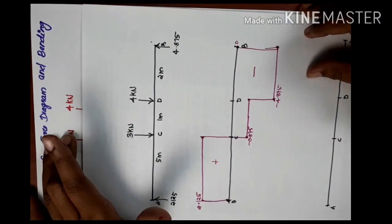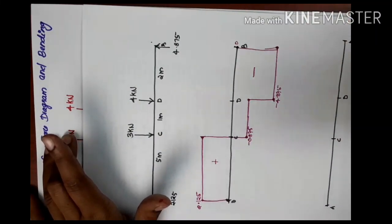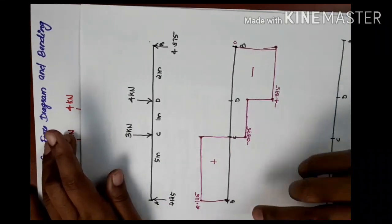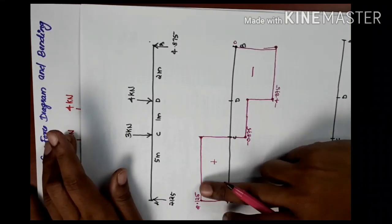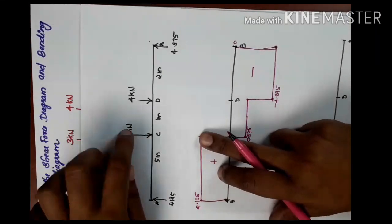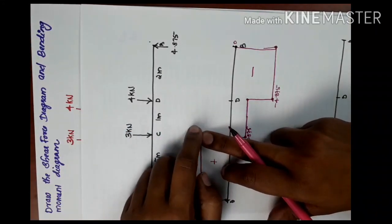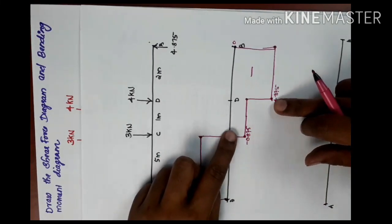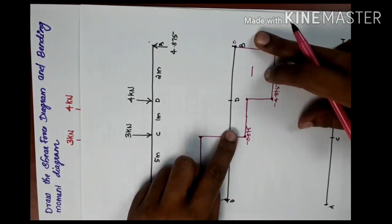Hope you all understand — this is very easy. If we take a positive value on one side, the other side is negative. Positive regions are above the line and negative regions are below the line.